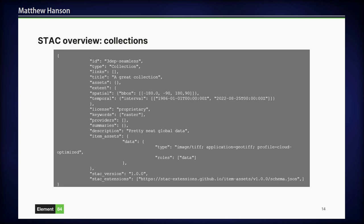The next data structure is collections. Collections are a set of related items, and they summarize information about those items. I like to think of them as namespaces — within a collection you cannot duplicate IDs, but IDs can be duplicated across collections. Collections are really useful for discovery; they include spatial and temporal extents. They can also summarize attributes of the data and describe what assets are available in the collection.